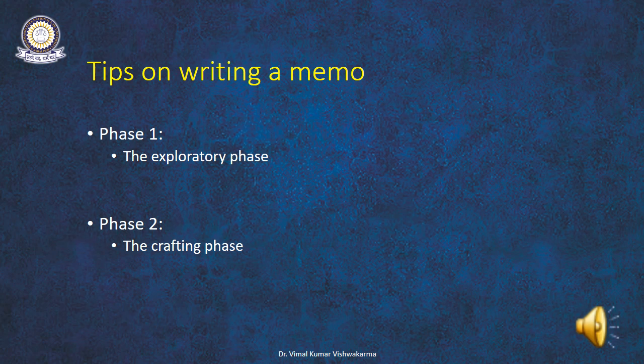Start writing your memo. Begin the body with your phase one category, then go down your list. Use the headings as subheads throughout the text, and place background or support information at the end. To achieve a more personal, human touch, always use 'you' and 'your.' For example, instead of saying 'everyone is requested to provide input on course content,' say 'please send me your course content ideas.'